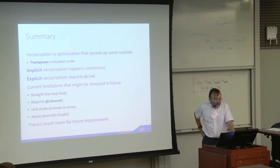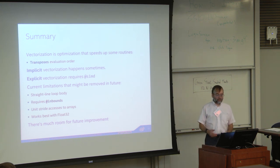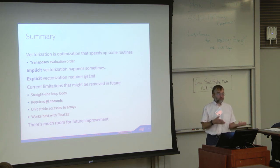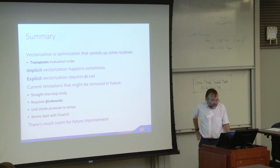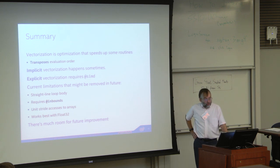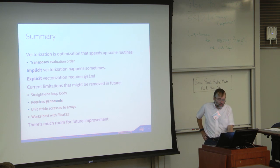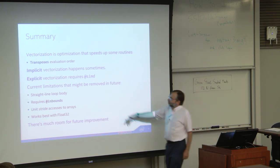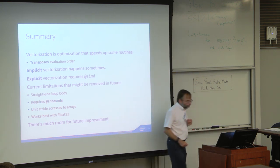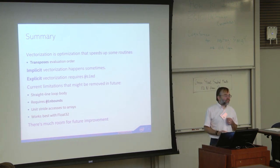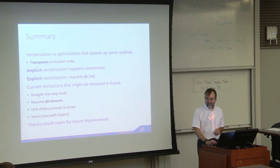To summarize: vectorization just transposes the evaluation order. Implicit vectorization happens sometimes — in fact, sometimes you find that @simd doesn't speed up your code because the implicit vectorization already got to it, and all the explicit @simd got you was saving runtime checks. There are a bunch of limitations I'd like to remove in the future. If you're interested in taking any of these up as a project, I'm happy to hand off the work and describe how to attack it.